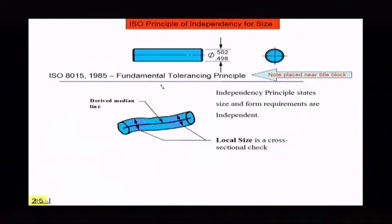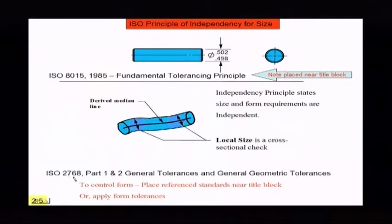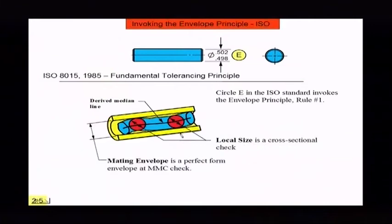And that principle of independency you can find in ISO 8015. So if there are any engineering drawings from ISO and they listed that near the title block, that means this principle of independency applied. Now what form did they have on them? Form wasn't controlled. You also had to add another number next to the title block, 2768. There's part 1 and 2. And it was general tolerances and general geometric tolerances. And then what they did is they told you what the form was or else what you'd have to do is apply these form tolerances. In ISO, if you wanted to invoke the envelope principle, then you put a circle E and then you got back what we have here in the US ASME standard. So what this rule 1 does is preserves the functional requirements.